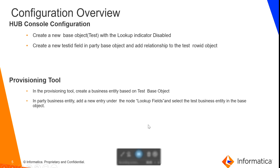Configuration overview: In the hub console, we are going to create a new base object called 'test' with the lookup indicator disabled, then create a new test ID field in a party base object and add a relationship to the test row ID object. In the provisioning tool, we will create a business entity based on the test base object, and in the party business entity, add a new entry under lookup fields selecting the business entity and base object.